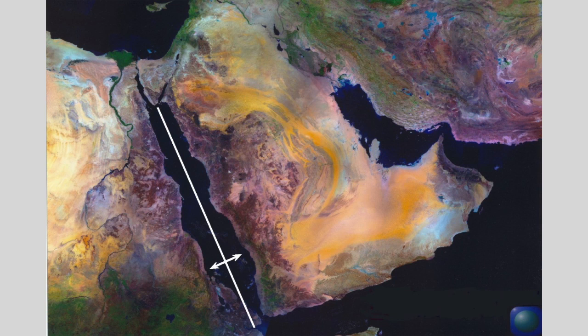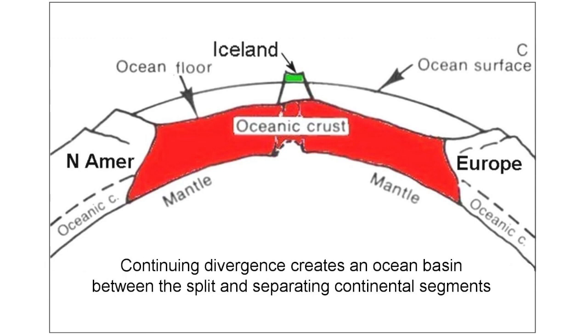If we continue the separation between the Arabian Peninsula and Egypt, what we'll wind up with is a much wider body of water than the Red Sea. We're making new continental crust under the Red Sea, and as that gets wide enough we'll wind up with an Atlantic-sized basin — comparable to North America on the west and Europe on the east.